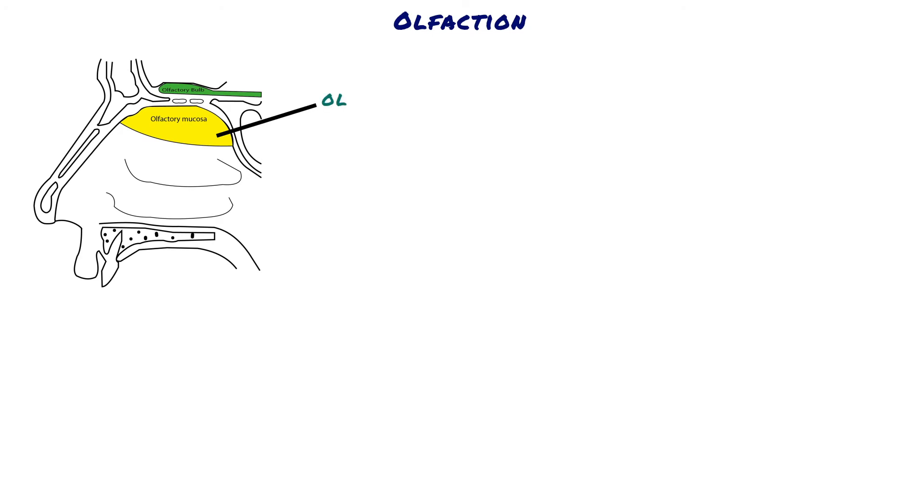The organ of smell is the olfactory epithelium. The olfactory membrane lies in the superior part of each nostril. Medially, the olfactory membrane falls downward along the surface of the superior septum. Laterally, it falls over the superior turbinate.